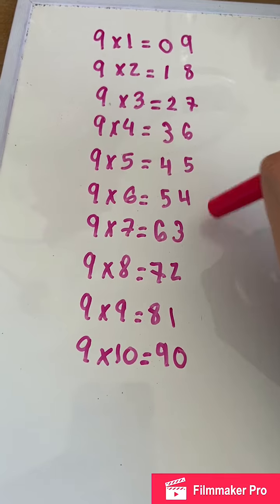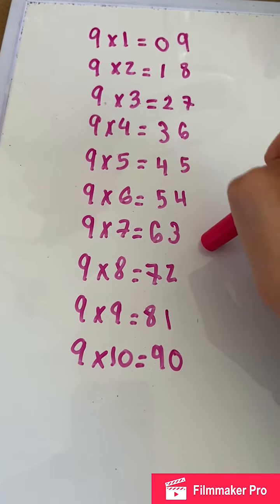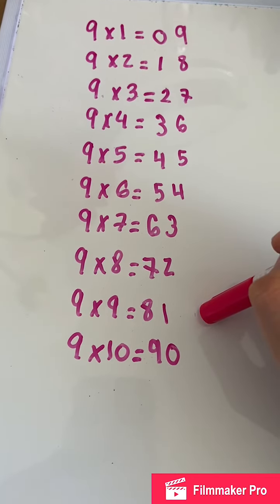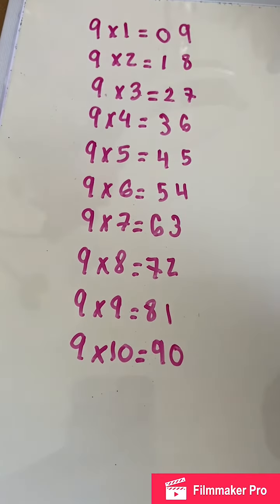Nine times six is 54. Nine times seven is 63. Nine times eight is 72. Nine times nine is 81. And nine times ten is 90.